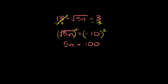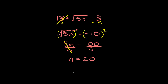To get rid of this 5 we'll divide both sides by 5. Those cancel out, so we're left with n is equal to 100 divided by 5, which is 20. So our answer is n is equal to 20.